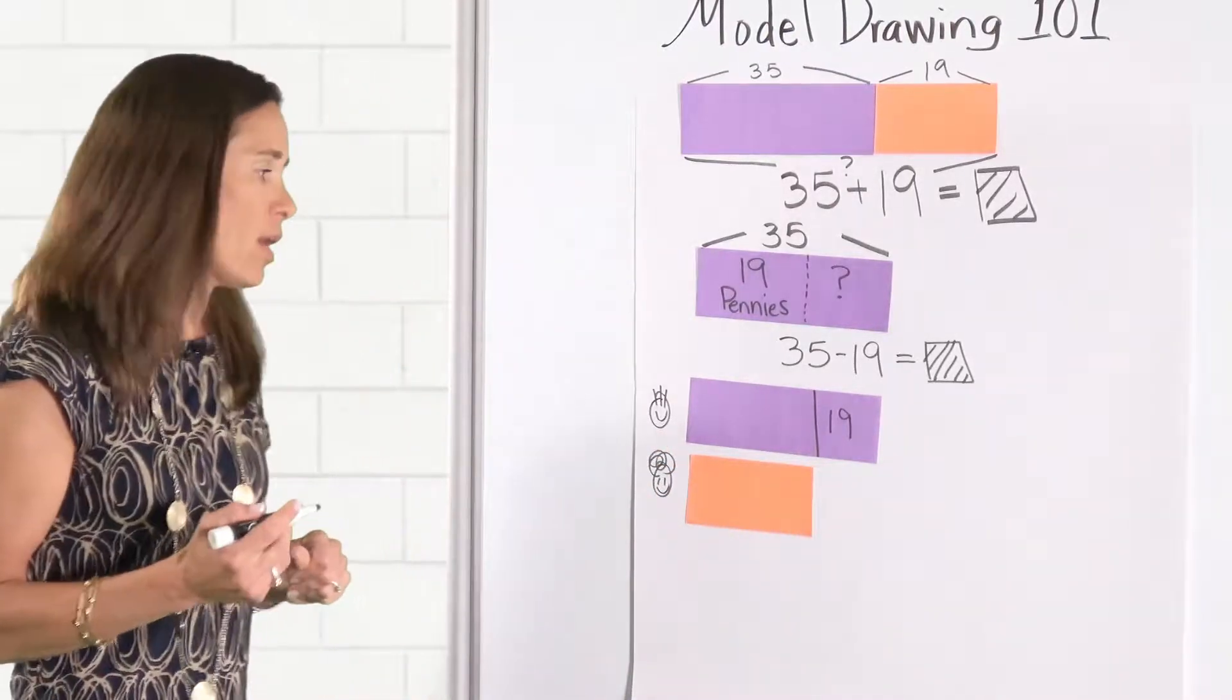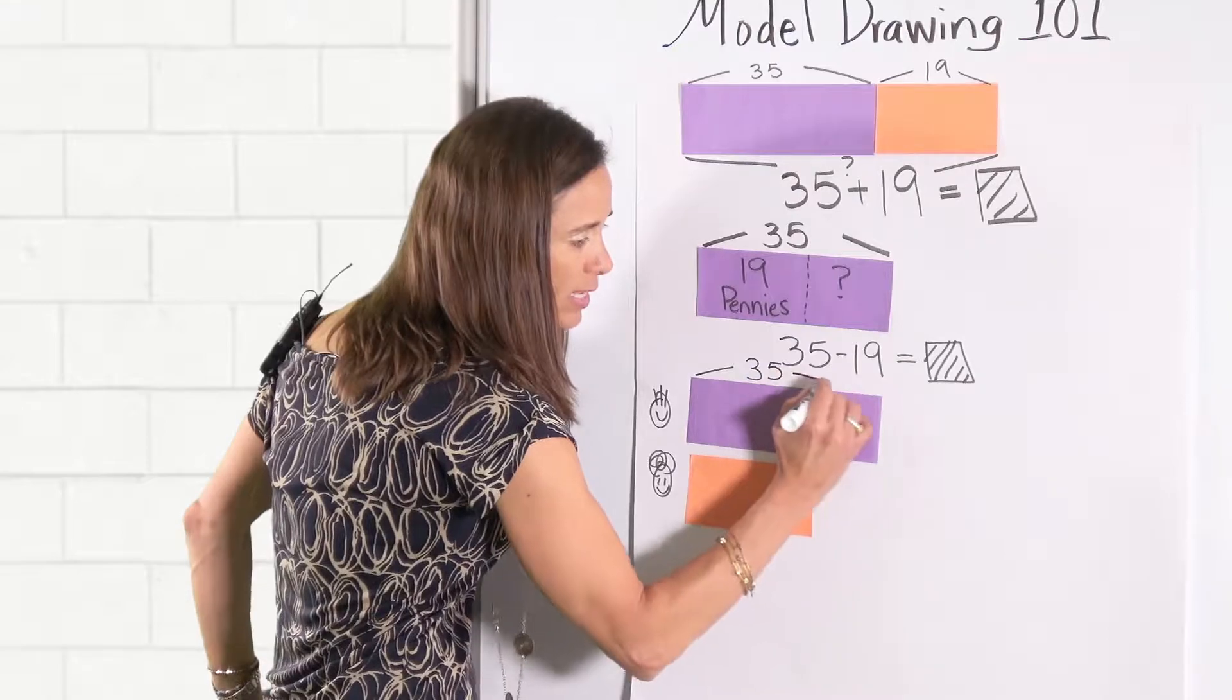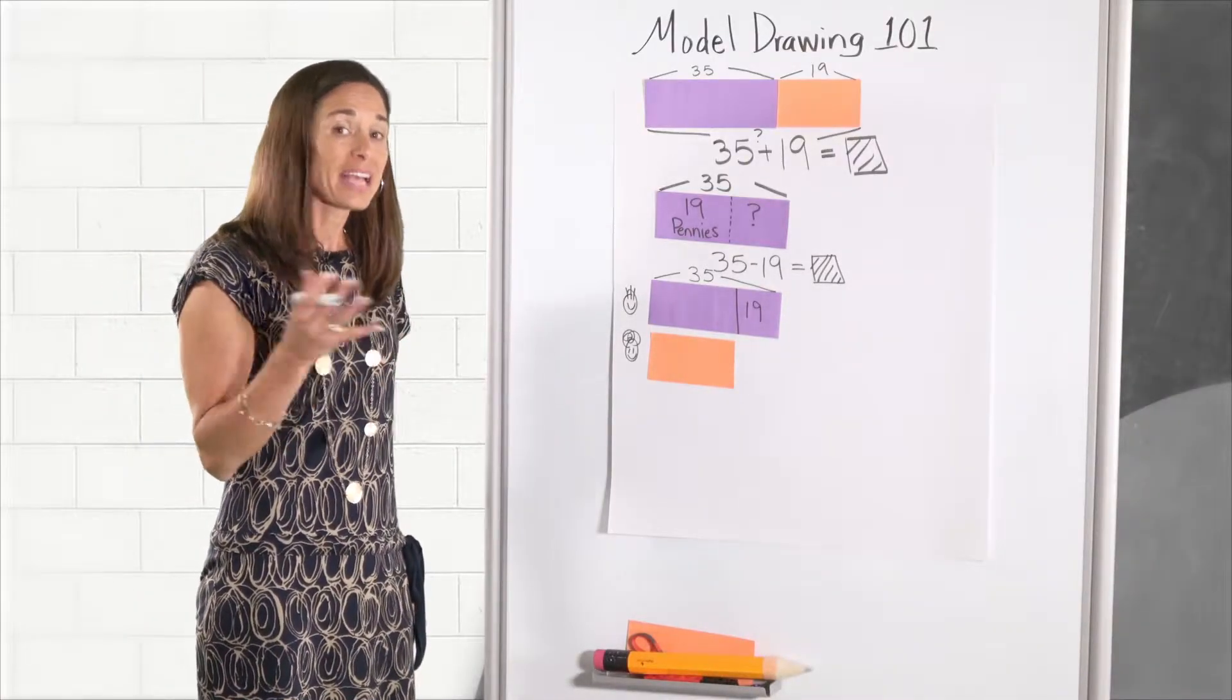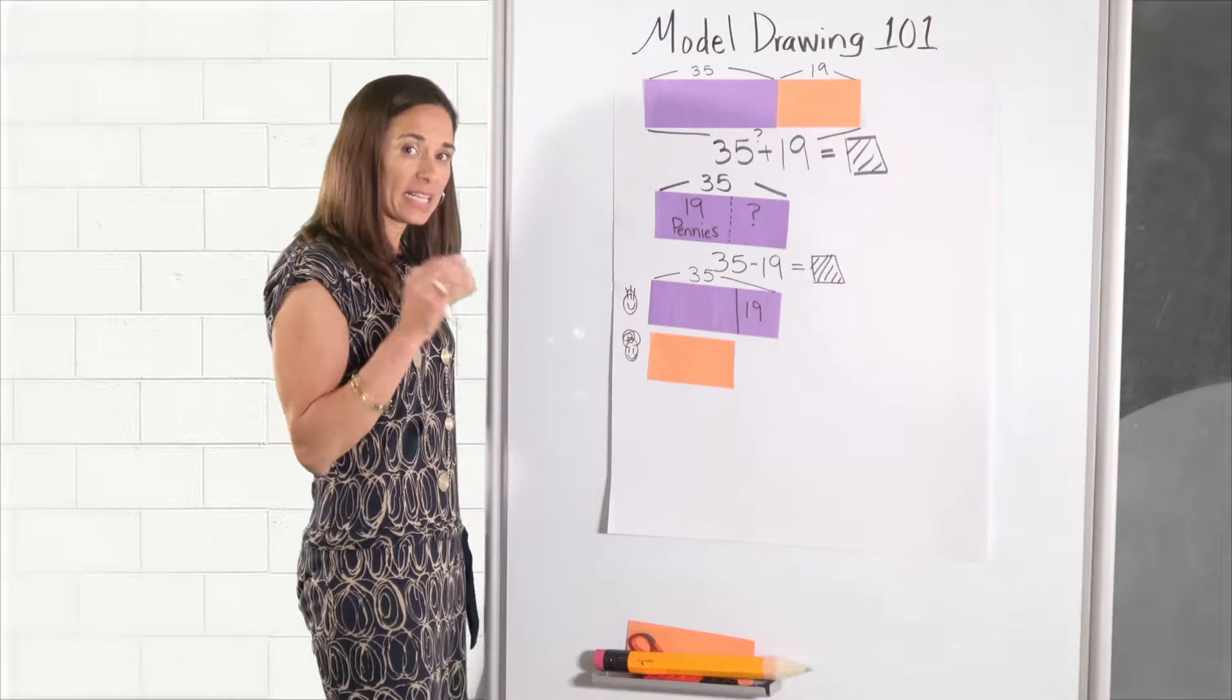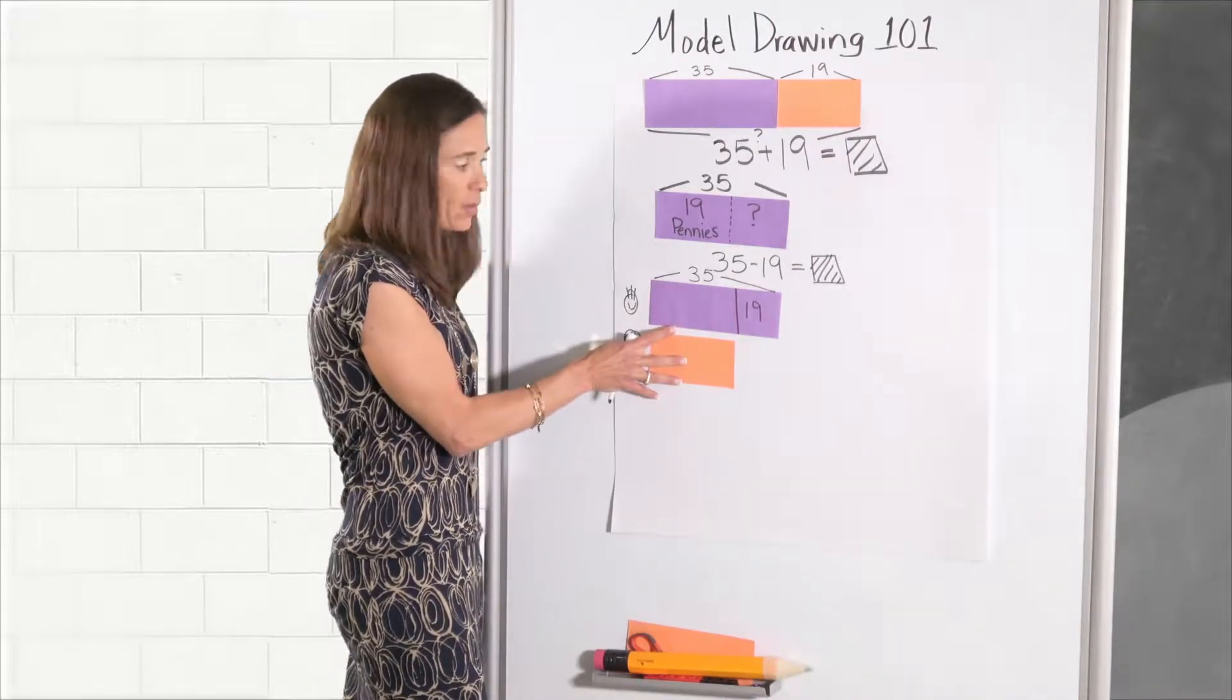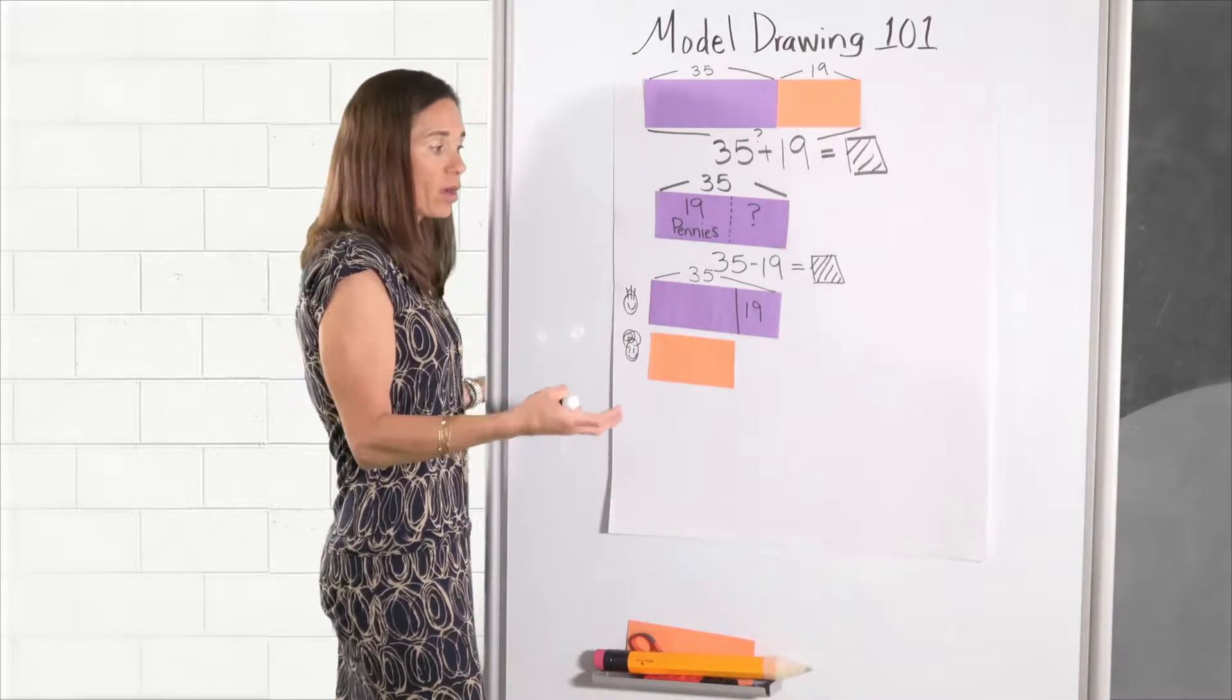So we can see the 19 and where that goes. What else do we know? We know that Spikey has a total of 35. So we can show that. Now this problem on purpose has no question. So I just wanted to demonstrate that sometimes it's helpful to leave the question out to see if the kids can comprehend what's going on. But then to extend it by asking them what could we ask.